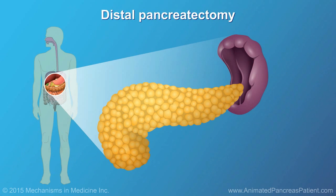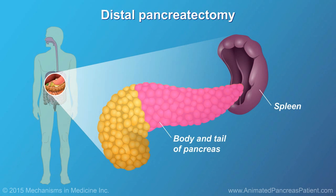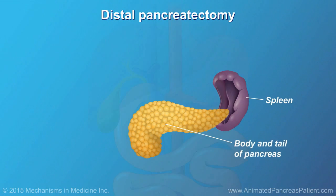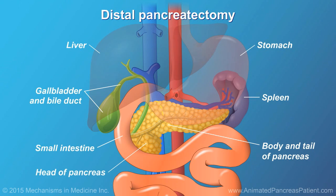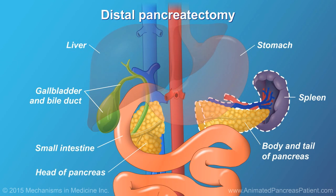Tumors, cysts, and obstructions in the body or tail of the pancreas are removed using a procedure called a distal pancreatectomy. In a distal pancreatectomy, the affected portion of the pancreas and often the spleen are removed. To complete the procedure, the cut end of the pancreas is stapled or sutured closed.